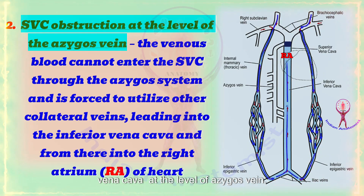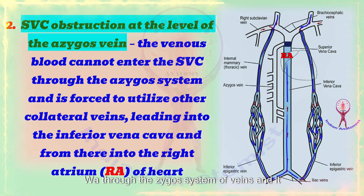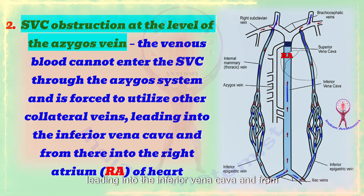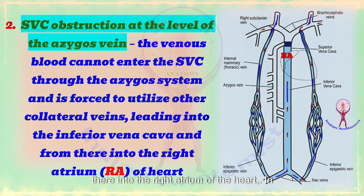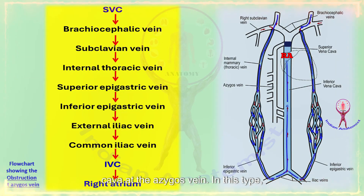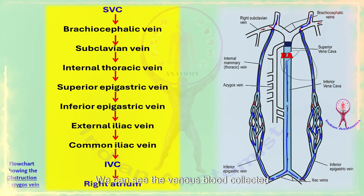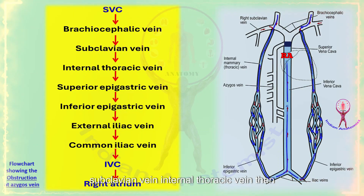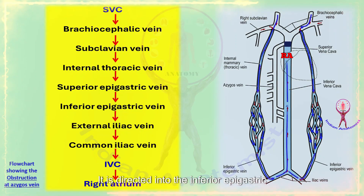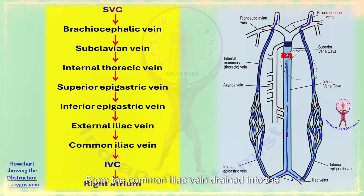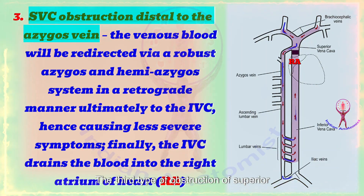The second type is obstruction of the superior vena cava at the level of the azygos vein. In this type, venous blood cannot enter the superior vena cava through the azygos system and is forced to utilize other collateral veins leading into the inferior vena cava and from there into the right atrium. The venous blood drains through the brachiocephalic vein, then the subclavian vein, then the internal thoracic vein, entering the superior epigastric vein, then directed into the inferior epigastric vein, external iliac vein, and common iliac vein, draining into the inferior vena cava.